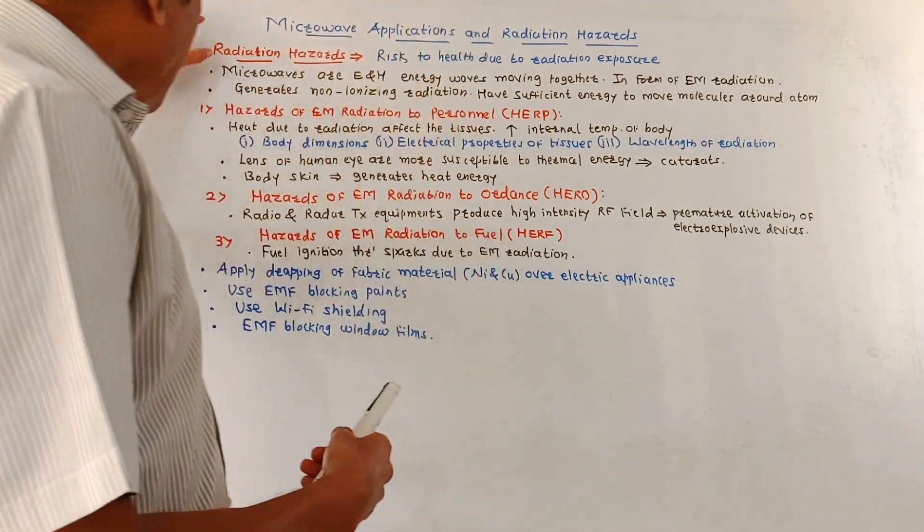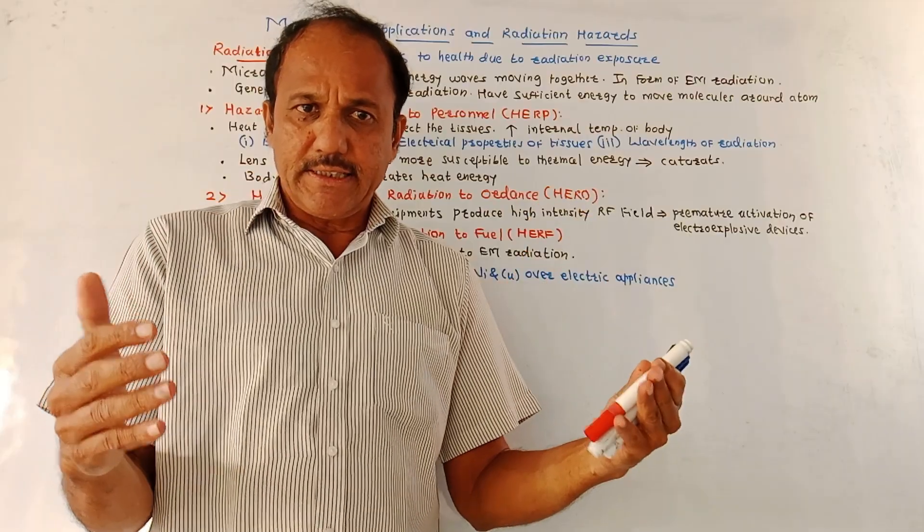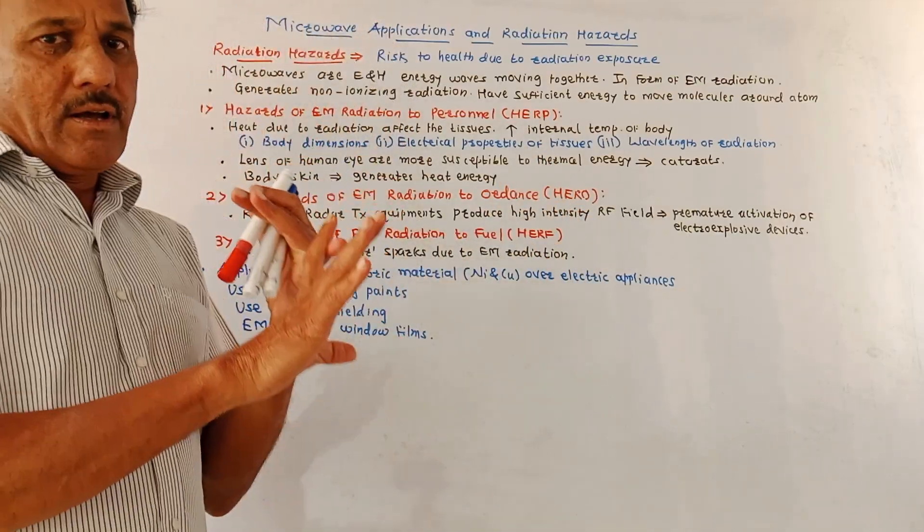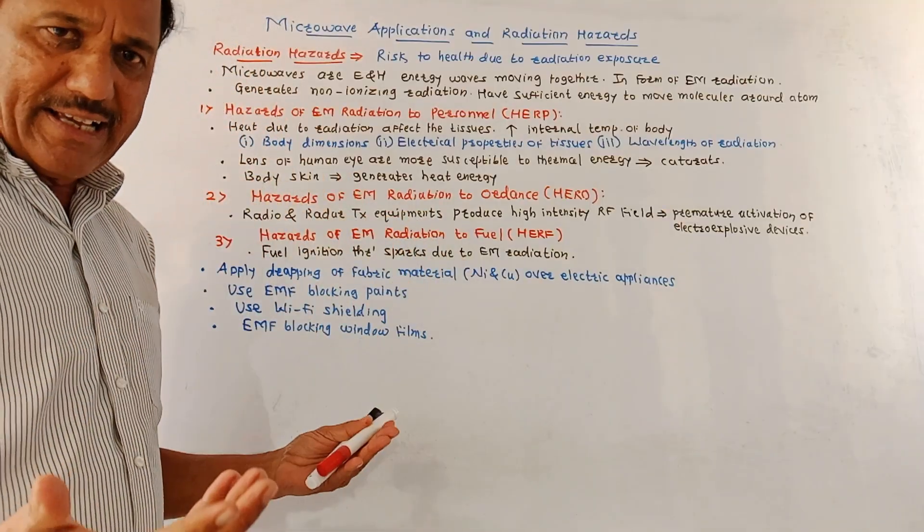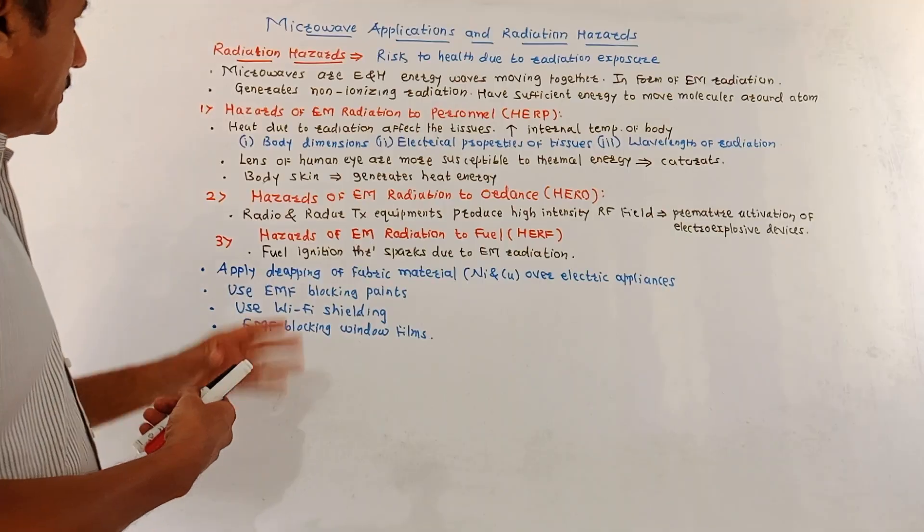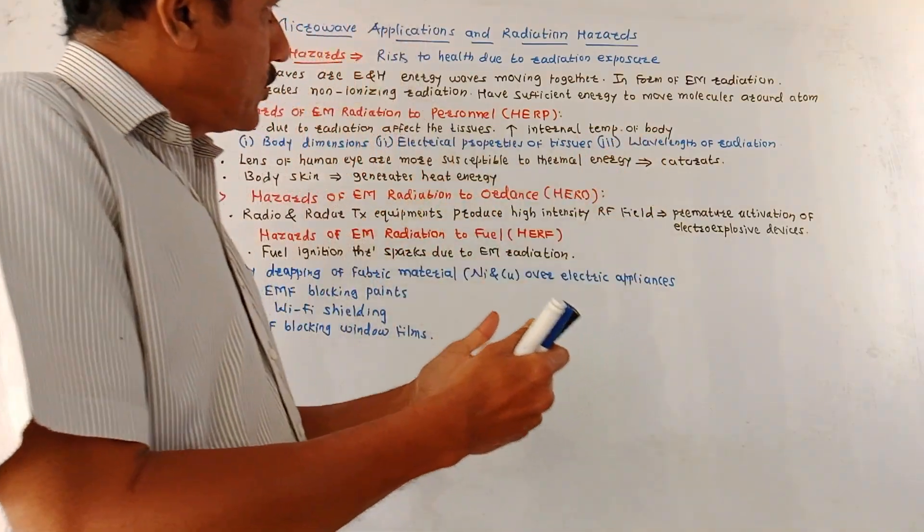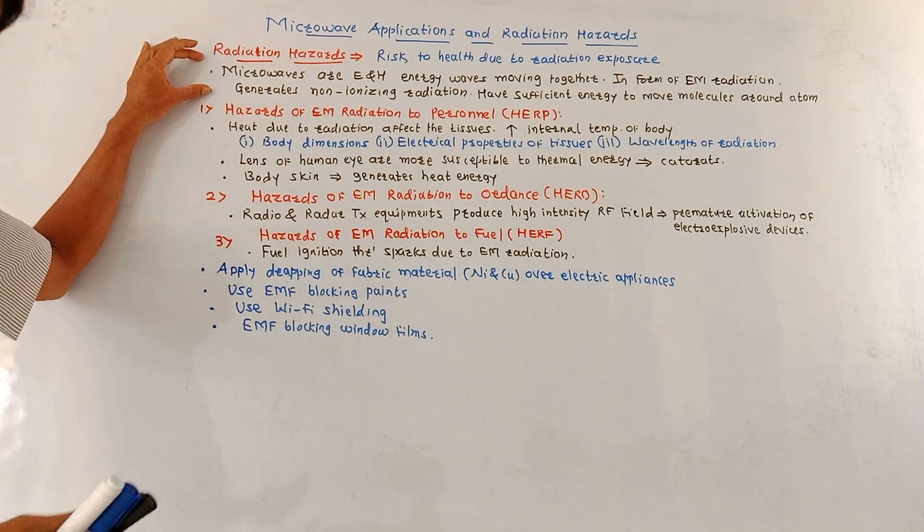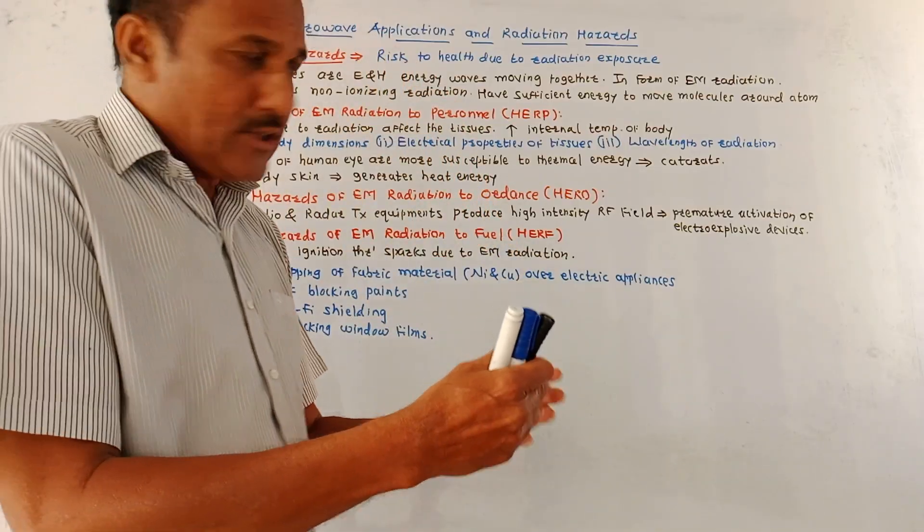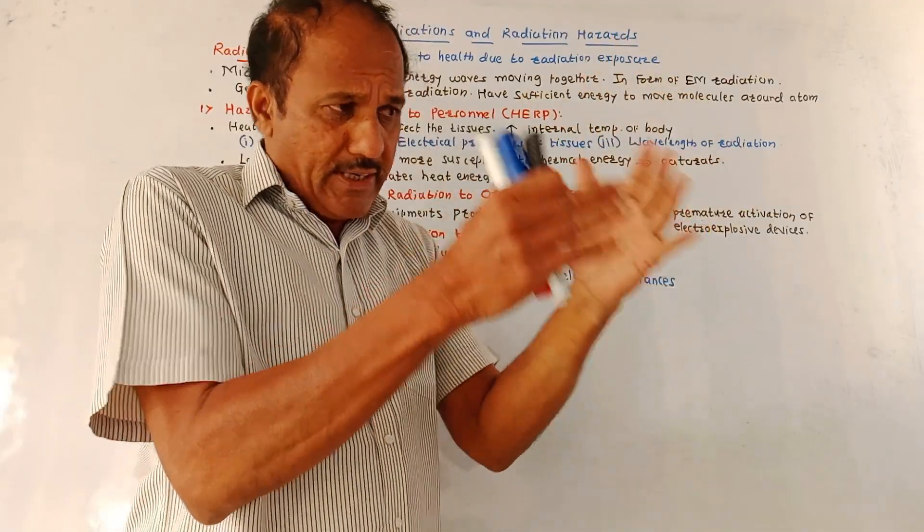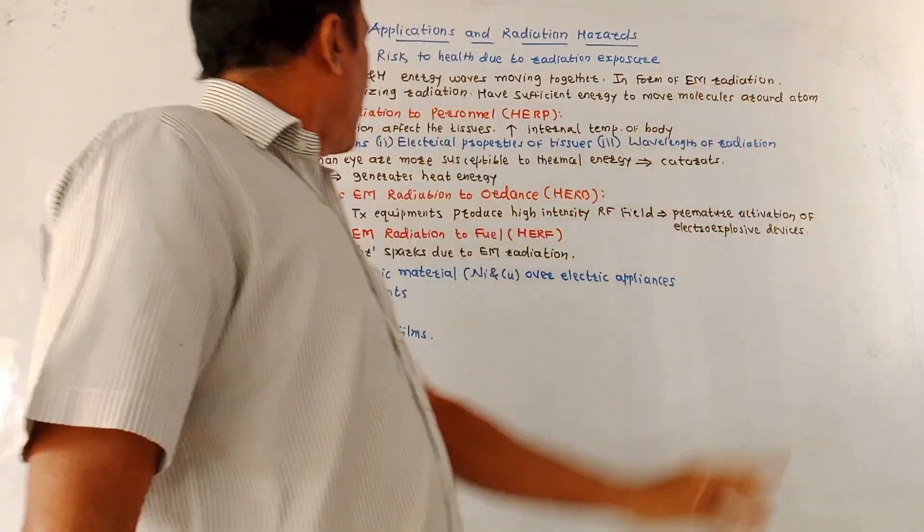Now the most important part is radiation hazards. From the exam point of view, you may expect questions like: What are microwave radiation hazards and what are its types? Or explain the effect of radiation on humans and how it can be avoided. Or write a short note on microwave radiation hazards. Radiation hazards means it is risk to health due to exposure to microwave radiation. We know that microwaves are E and H, that is electric and magnetic energy waves traveling together. This type of waves, when electric and magnetic waves are traveling together, they form some kind of electromagnetic radiation, EM means electromagnetic radiation.